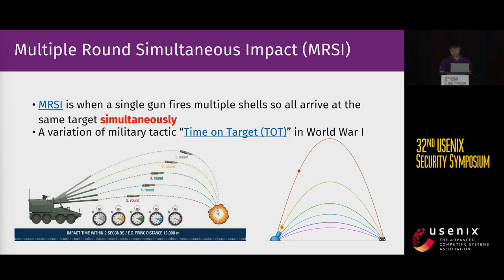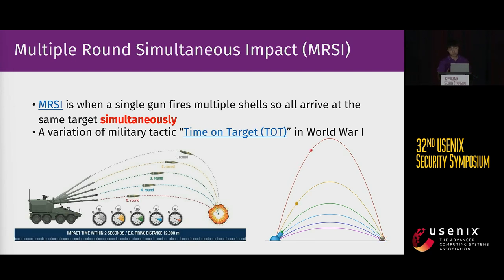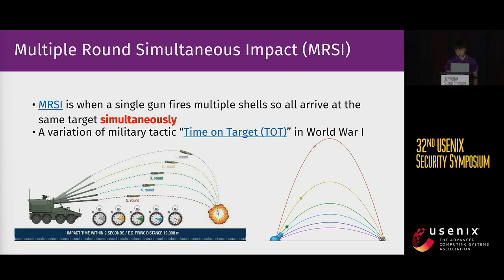The clever British military devised a solution shown in the diagram. By precisely arranging different artillery units to launch shells with varied flight times, they can ensure that all shells hit the target together. This tactic is known as multiple-round simultaneous impact, shortly MRSI, and is widely supported by long-range artillery in modern armies.